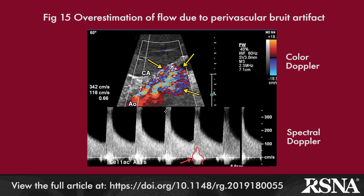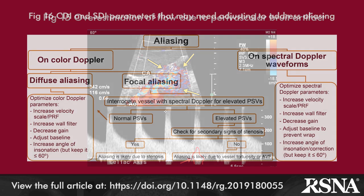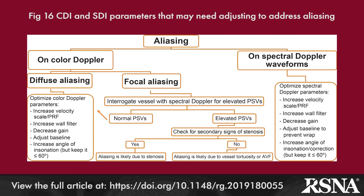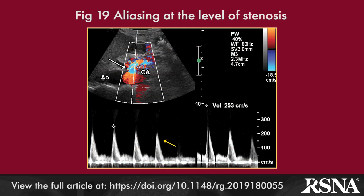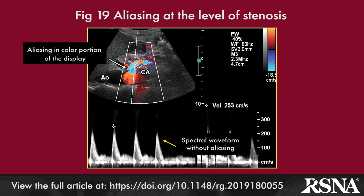The article then discusses aliasing, which is a multicolored heterogeneous color display due to a disturbed flow pattern. Several Doppler parameters may require adjustment, as detailed in Figure 16. The article provides a detailed explanation of the physics underlying aliasing. The authors point out that when aliasing is associated with a true blood flow disturbance, it allows the operator to quickly localize the area of highest velocity and thereby identify areas of stenosis or high-velocity flow abnormalities such as arteriovenous fistulas.